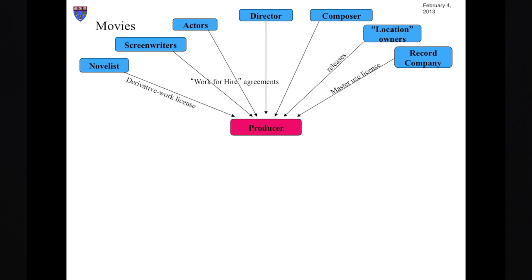If the producer wishes to include an existing sound recording in the soundtrack of the movie, the producer will obtain a so-called master use license from the record company that owns the copyright in the sound recording, and a synchronization license from the music publisher that, as we saw, owns the copyright in the composition embodying the recording.